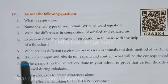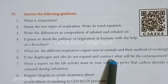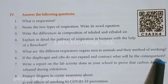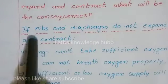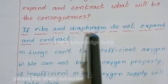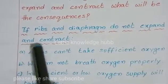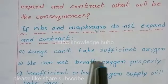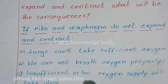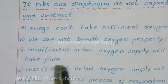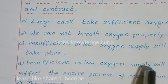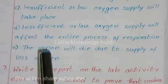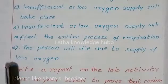Sixth question: If the diaphragm and ribs do not expand and contract, what will be the consequences? Answer: If ribs and diaphragm do not expand and contract, lungs cannot take in sufficient oxygen. We cannot breathe properly; insufficient or low oxygen supply will affect the entire process of respiration, and the person will die due to insufficient oxygen supply.